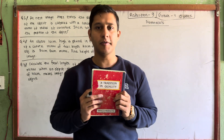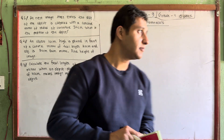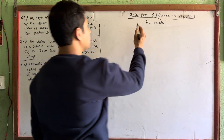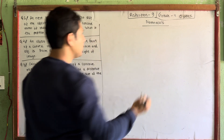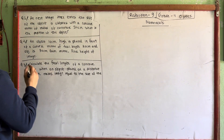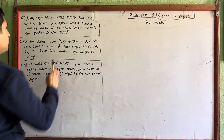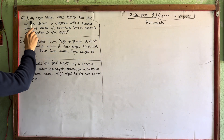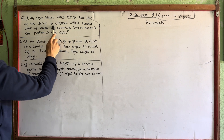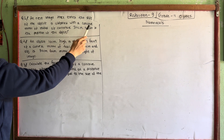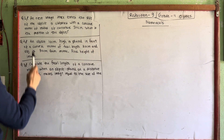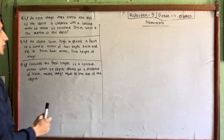Hello everyone, welcome to this class. Today I am going to do grade 11, and I am looking at an important numerical. So let's start with the first question. An erect image means three times the size of an object is obtained with a concave mirror of radius of curvature 36 cm. What is the position of the object?